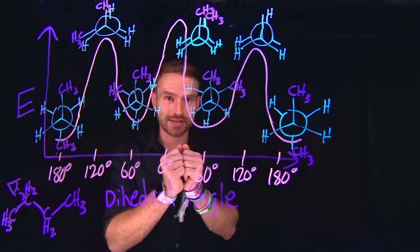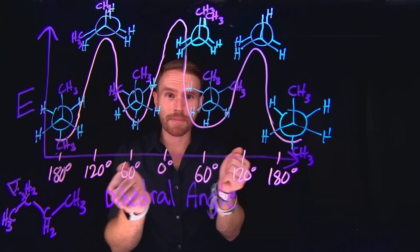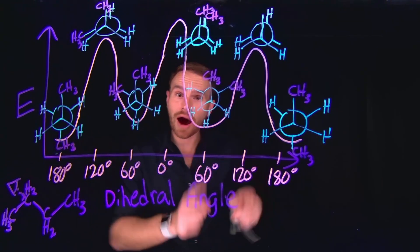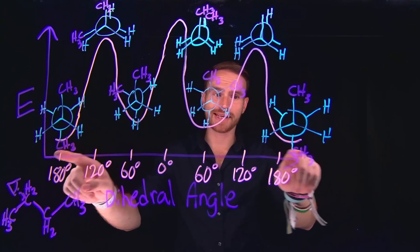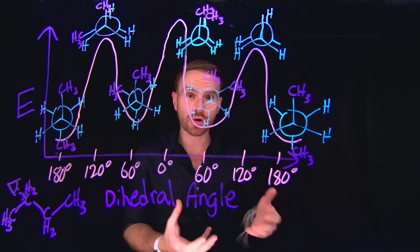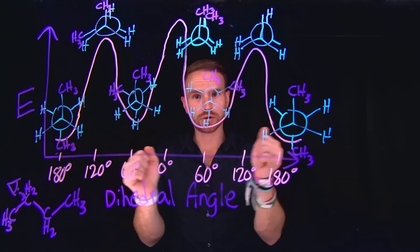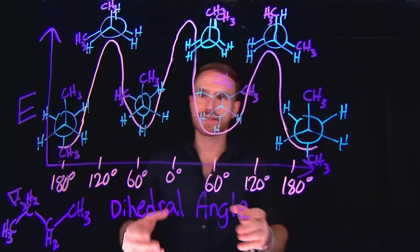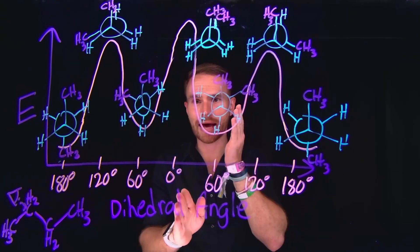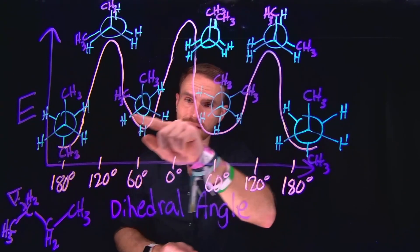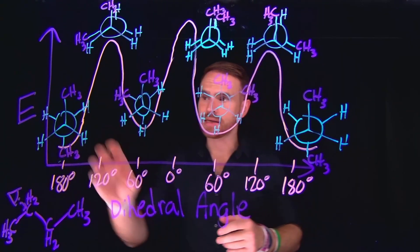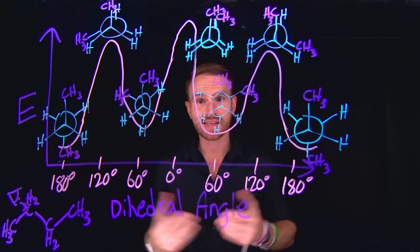Since we have those larger methyl groups, when those methyl groups are directly eclipsed with one another, that is actually the highest energy point because those two very large substituents can come into contact. This is sometimes known as steric hindrance, where the size and location of the substituents may cause them to come into contact, and since those are clouds of electrons, they repel one another. When they're opposite one another at a dihedral angle of 180 degrees, with the two methyl groups directly 180 degrees apart, those are the lowest energy positions. Depending on the orientation and closeness of those two methyl groups, we get different energy values.